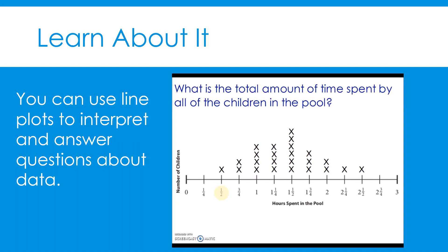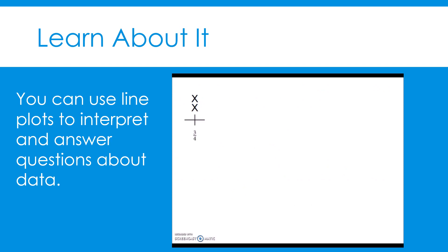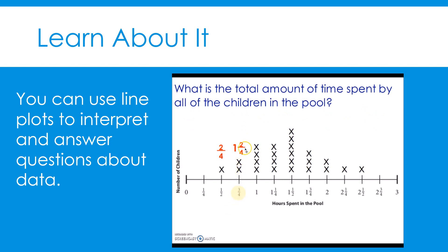Let's start by looking at the X above one-half — that X represents one-half an hour. There's only one of them. However, all of the other denominators on the number line are in fourths, so instead of keeping this as one-half, I would like to change it to an equivalent fraction in fourths. One-half is equivalent to two-fourths. Now let's look at the next column, three-fourths. There are two X's. Since there are two X's above the value three-fourths, that is the same as adding three-fourths and three-fourths. Three-fourths plus three-fourths equals six-fourths, which is the same as one and two-fourths. So we will add one and two-fourths — that is the total of these two X's.